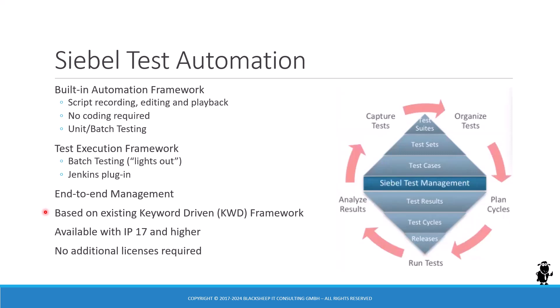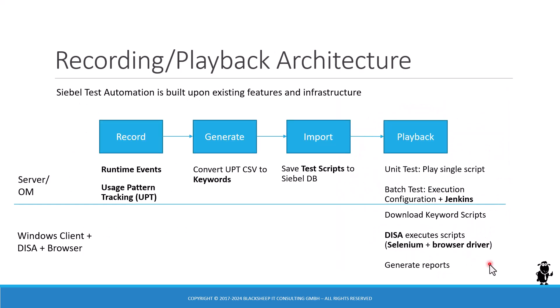So it's building on the shoulders of giants, and in this course you will understand all the building blocks including the KWD framework and learn how to use the modern Siebel test automation in IP 17 and higher. In the architecture chapter we'll learn everything about the building blocks that make Siebel test automation possible — that is the recording architecture and of course the playback architecture including unit testing and batch testing.